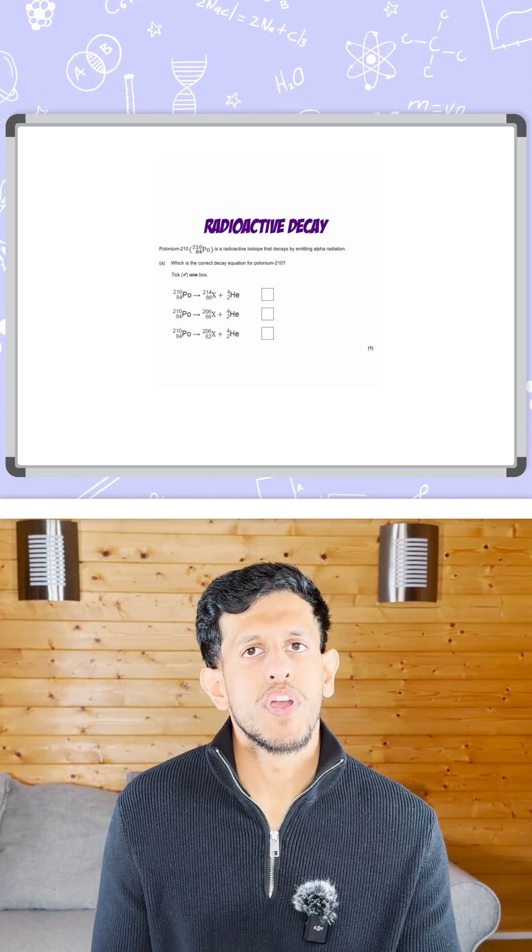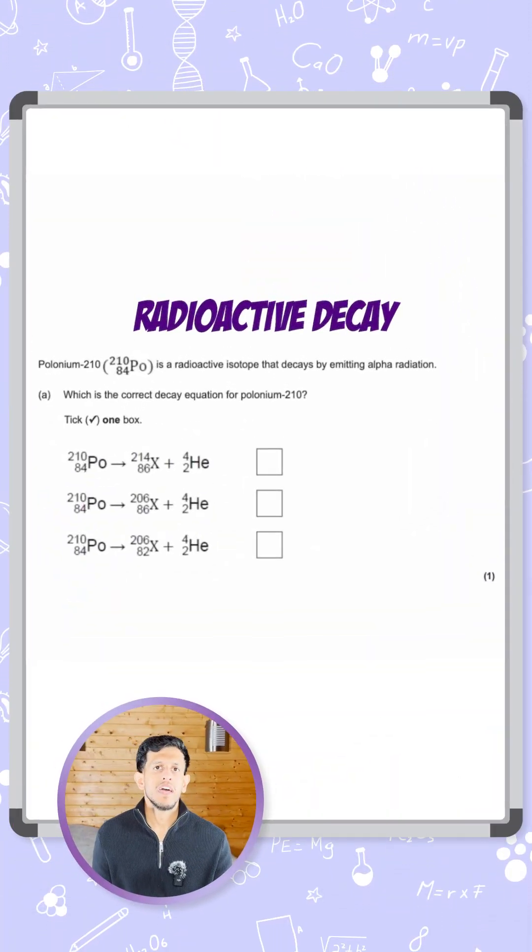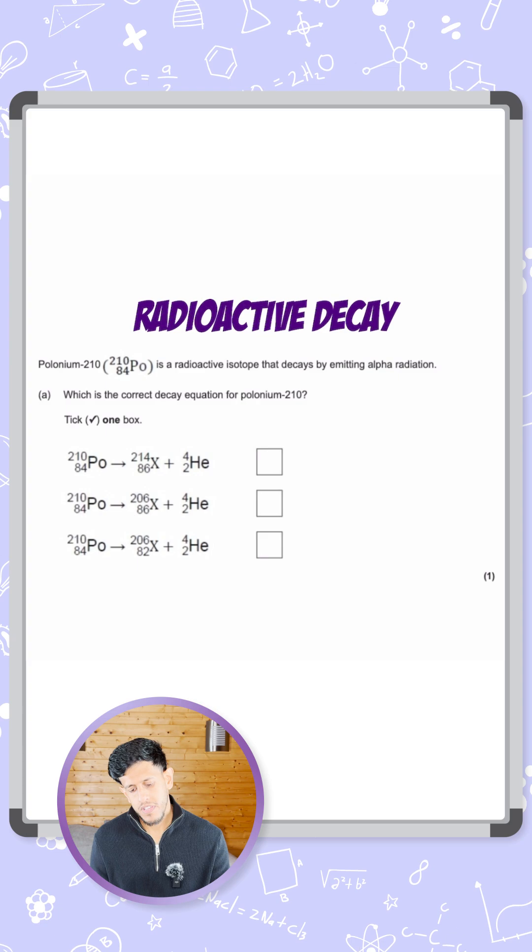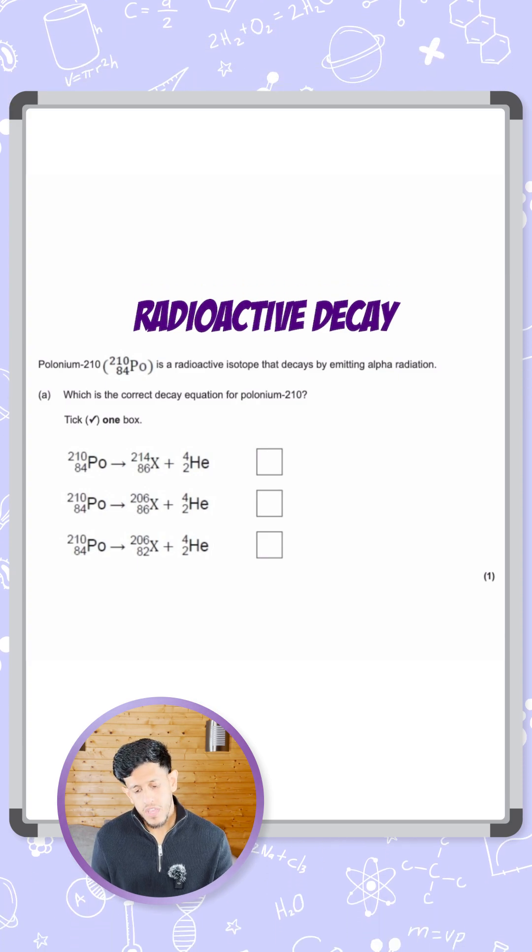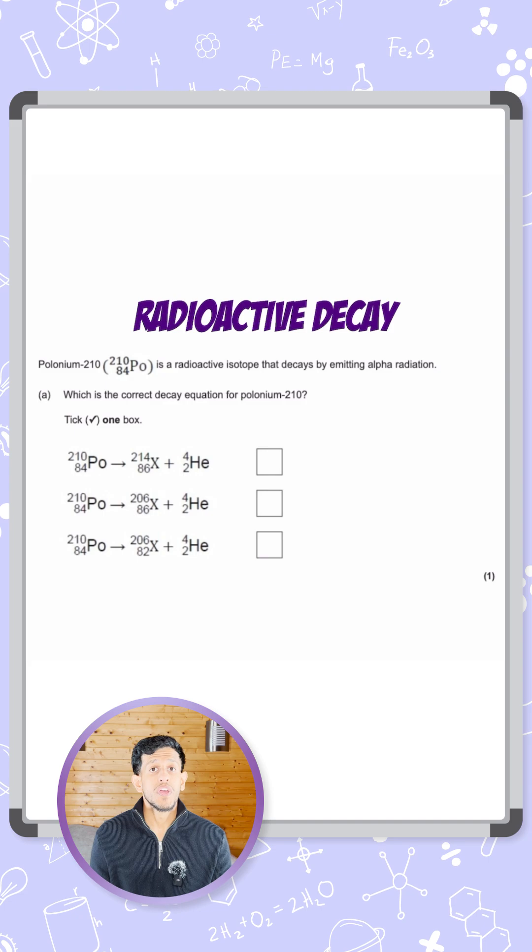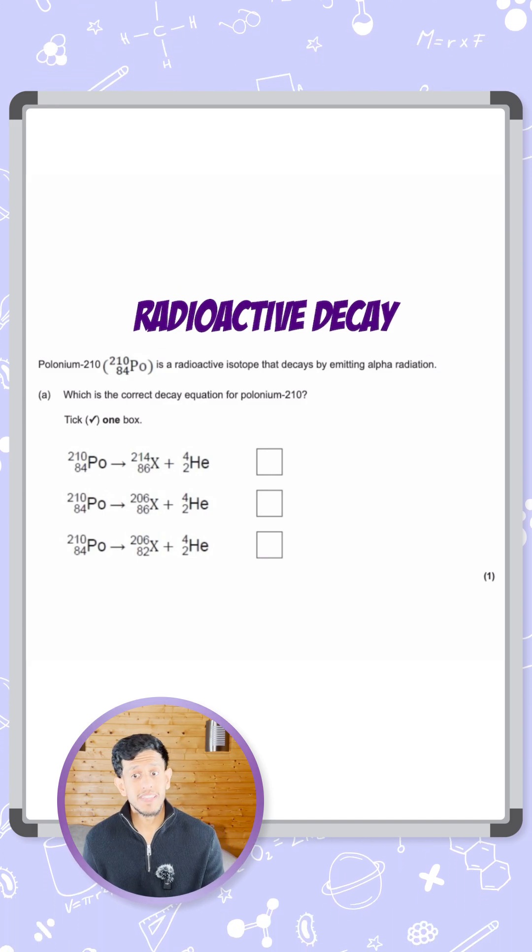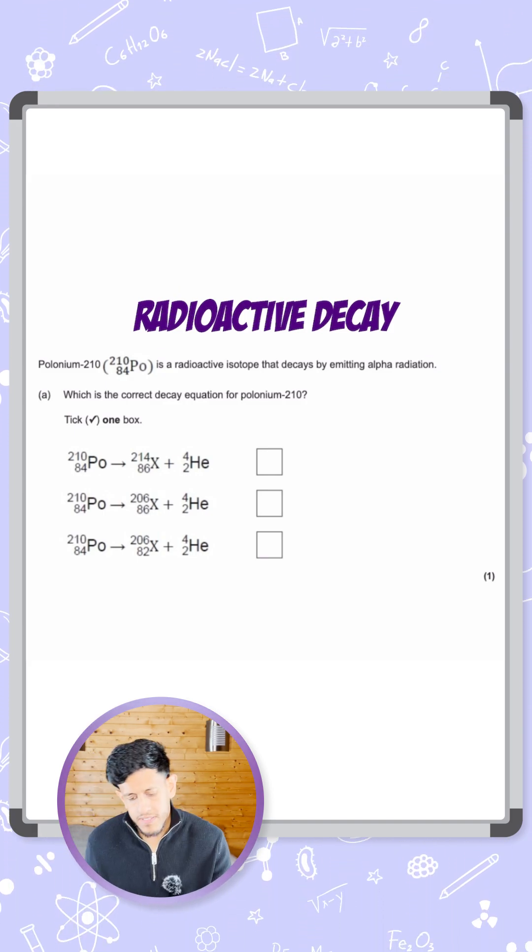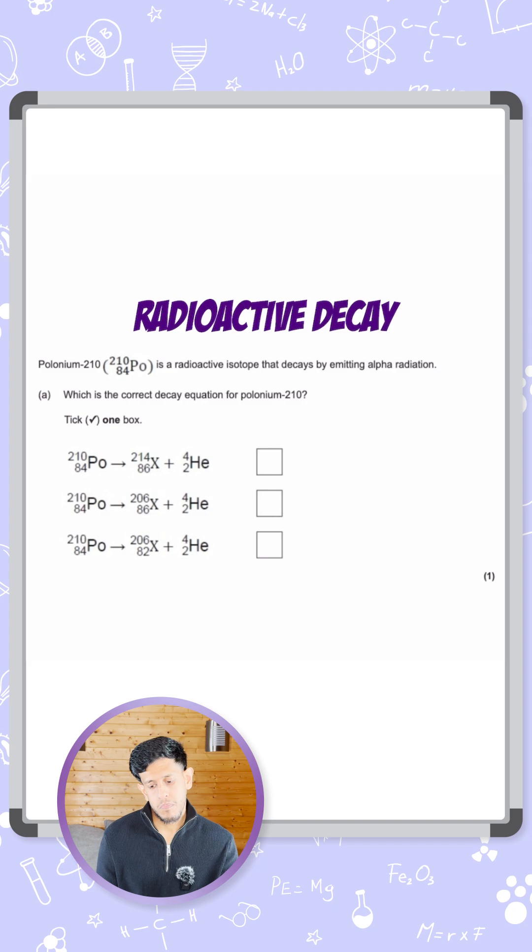Okay, so here we have a question on radioactive decay, in particular a decay equation. It's asking us for polonium-210, atomic number 84 and mass number 210. It's a radioactive isotope that decays by releasing alpha radiation, and it says which is the correct decay equation for polonium-210.